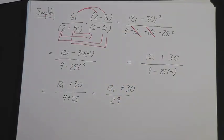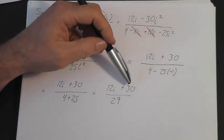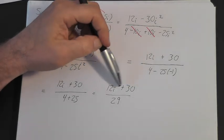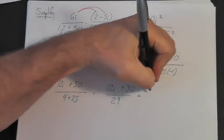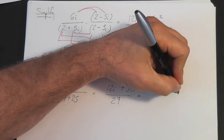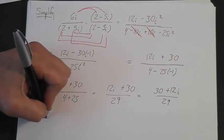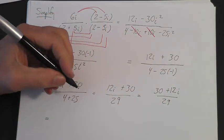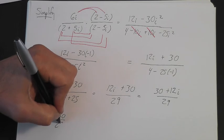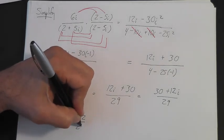So you have 12i plus 30 over 29. We like to write the numerator in standard form, a plus bi, so we put the real part first: 30 plus 12i over 29. Then we separate the real and imaginary parts, giving 30 over 29 plus 12 over 29 i. And that's your final answer.